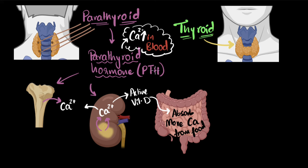But now we may ask: what if the calcium levels in the blood have increased? Well, the parathyroid detects that and it stops producing PTH, which means all these activities stop. But guess what? We care so much about calcium levels in our blood that we have another hormone. This time, the thyroid gland is also going to secrete another hormone that's going to affect calcium.